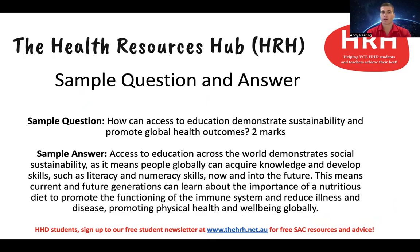Sample answer: Access to education across the world demonstrates social sustainability, as it means people globally can acquire knowledge and develop skills such as literacy and numeracy skills now and into the future. This means current and future generations can learn about the importance of a nutritious diet, promoting the functioning of the immune system, reducing illness and disease, and promoting physical health and wellbeing globally. Note the phrase 'now and into the future' and 'current and future generations,' and the use of 'globally' to show you're referring to people worldwide, not just one individual.